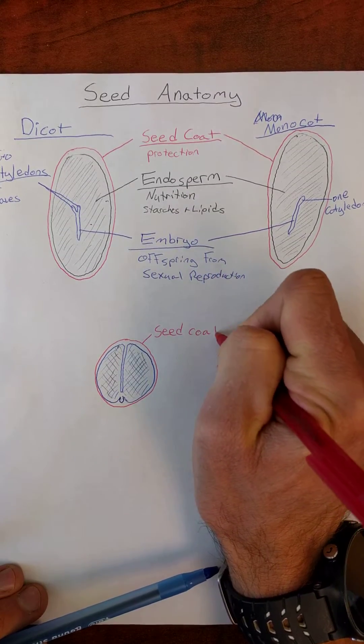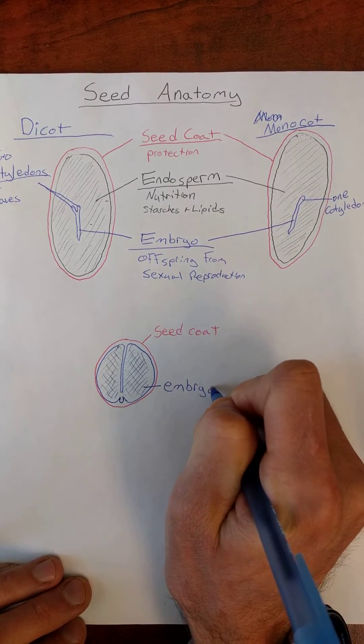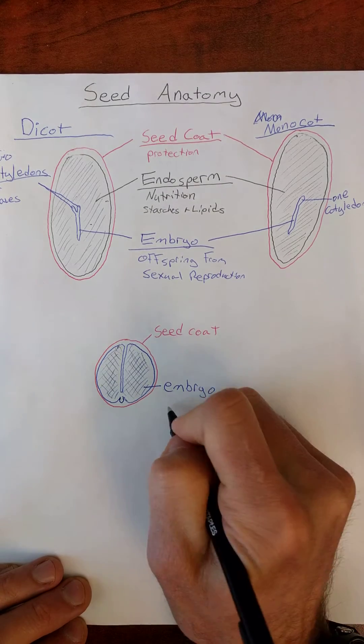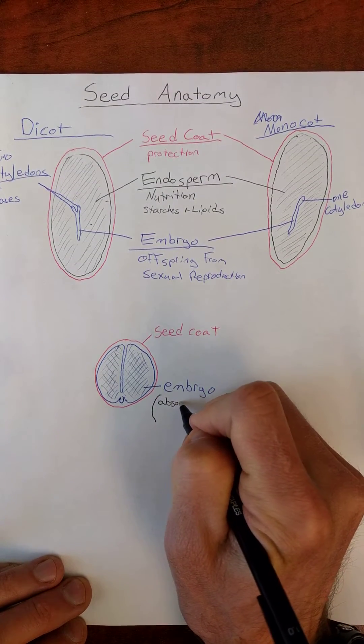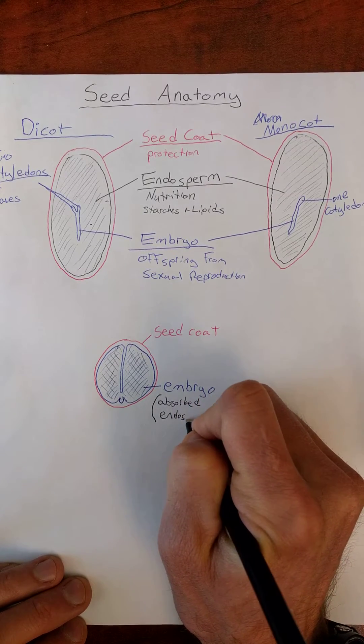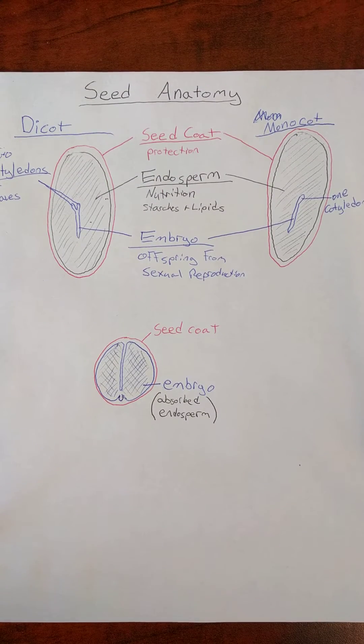Seed coat, embryo, absorbed endosperm. Details are a little more nitpicky than that, but that is good enough for an understanding for now.